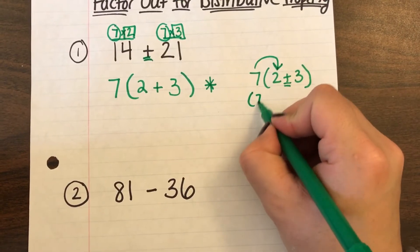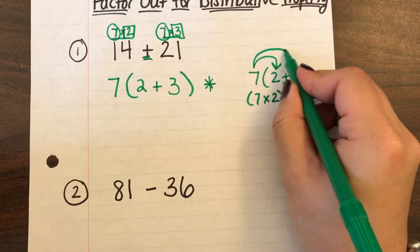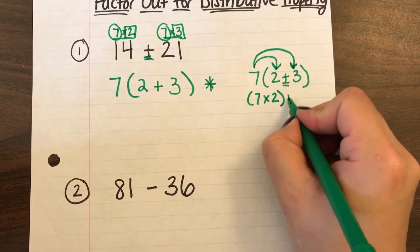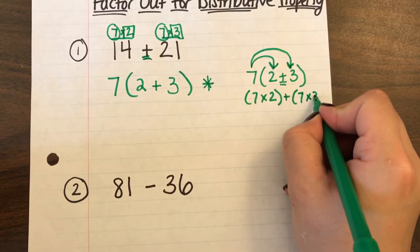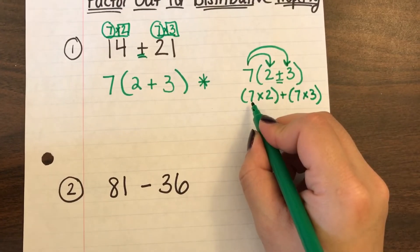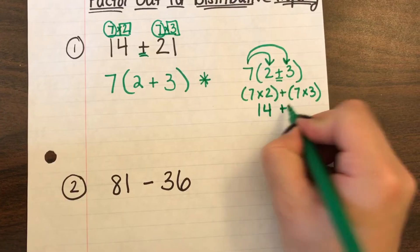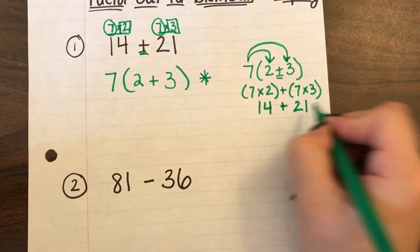So 7 times 2. And also say hi, multiply because it's a plus. So 7 times 3. And I know 7 times 2 is 14. And I know 7 times 3 is 21.